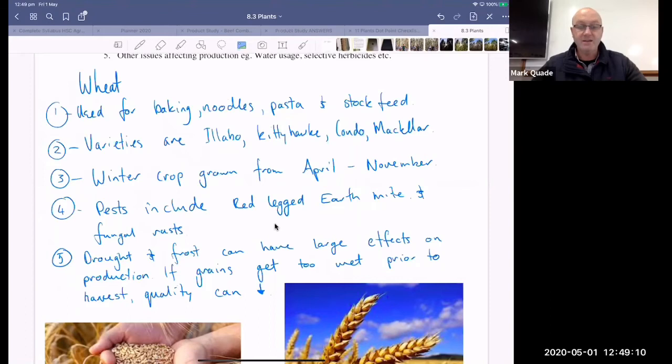And then any other issues? So drought and frost can have large effects on production. If the grains get too wet prior to harvest, quality can decrease. So if you get a frost when your wheat plant is flowering, those delicate parts of the plant get damaged and you don't get grain formation. So that whole crop has been wasted. Other issues might be hail can cause a huge amount of damage in a spring storm. Basically what happens if it gets too wet when the grains are fully mature? A lot of the enzymes get activated. Like the grains are ready to germinate. And so then we can't use that pretty much for anything other than stock feed. So it can be a really big issue.